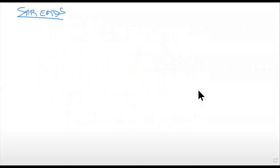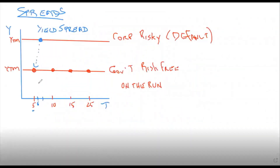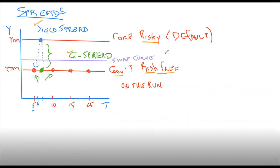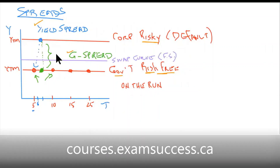Can you visualize what these spreads are? You've got to go through this to be able to have it laid down. This is material from level two and even level one, where we talk about a G-spread and an I-spread. Being able to lay it out this way can really help you visualize what's happening in terms of the yield spread versus a G-spread over the interpolated yield on the government bonds.